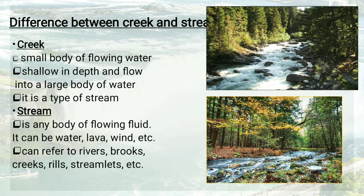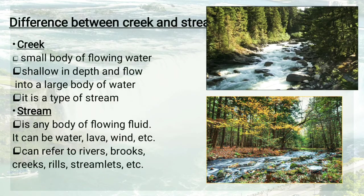The difference between creeks and streams: creeks are small flowing water bodies, shallow in depth, and they flow into a larger body of water. A creek is a type of stream — so a creek may be a stream, but a stream cannot be a creek. Streams are larger water bodies.